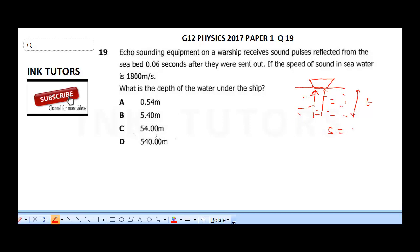Distance, speed, is equal to 2 times distance over time. That is how you now get the speed of sound. So, this is the formula you're supposed to apply here. It's not just distance over time. It's 2 times distance because they send the echo and they wait to receive it back because they said a warship receives sound pulses reflected from the seabed. So, it must reflect back.